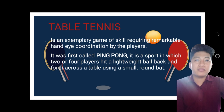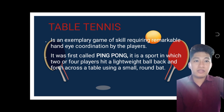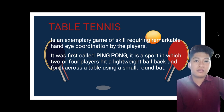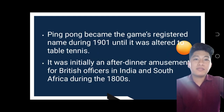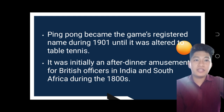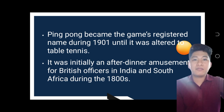Table tennis is an exemplary game of skill requiring remarkable hand-eye coordination. It was first called ping pong. It is a sport in which two or four players hit a lightweight ball back and forth across a table using a small round bat. Ping pong became the game's registered name during 1901 until it was altered to table tennis. It was initially an after-dinner amusement for British officers in India and South Africa during the 1800s.